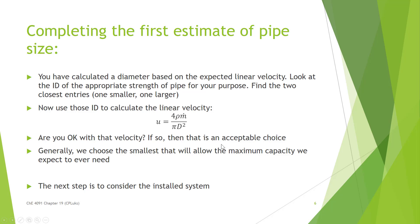Now you've calculated a diameter based on an expected linear velocity. How do you complete this first round estimate? The diameter you calculate probably won't match one of the inside diameters in the standard tables — it just never does. I recommend finding the two closest entries, one smaller and one larger, and using those to calculate what the linear velocity would be, working backwards. Then look at those velocities and decide if you're happy with them. In general, if you're happy with both choices, choose the smaller one — but choose the smallest that allows for the maximum capacity you ever expect to need. This is just our first guess, and most of the time the value doesn't change too much.